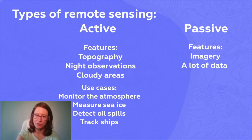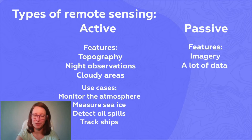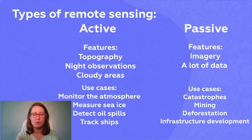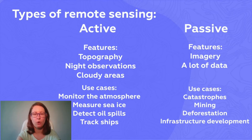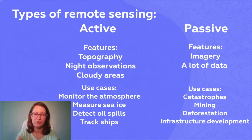The majority of satellites use passive sensing, so we have loads of data collected over 50 years. We can use it to show the consequences of natural or technogenic disasters by comparing images made before and after an event, or track mining, deforestation, and infrastructure development over decades.